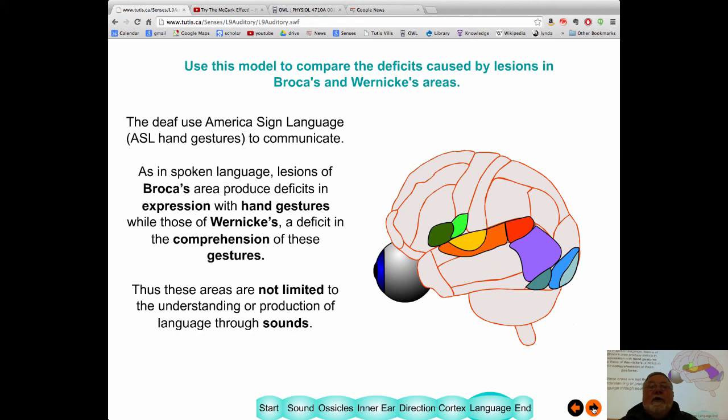If you're deaf, you often are taught American Sign Language. So, in American Sign Language, you speak through gesture, making gestures with your hands. Interestingly enough, if you have damage to either of these two areas, you have the same deficits that someone that's trying to speak has. So, if you have the damage to Broca's area, you have problems with your hand gestures. If you have a damage to Wernicke's area, you have difficulty in understanding these gestures. So, it looks like these areas are not just organized by sounds, but organized by sight as well.